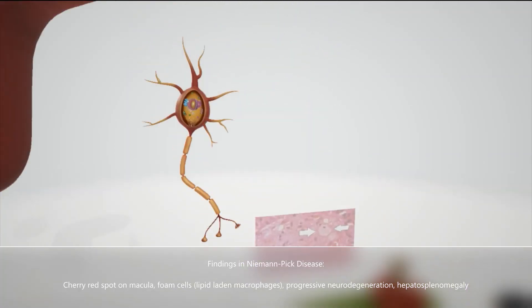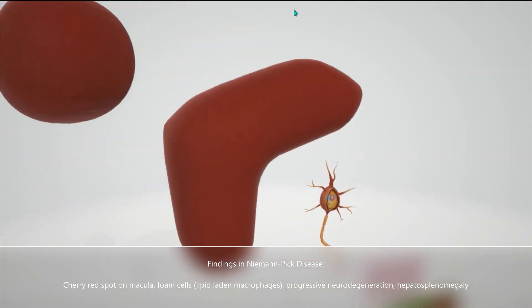Then the Sphinx goes through this neuron, and the neuron explodes. This helps us remember the progressive neurodegeneration seen in Niemann-Pick Disease due to the buildup of Sphingomyelin. Then the Sphinx goes through this gigantic liver and spleen in the sky. The gigantic liver and spleen help us remember the hepatosplenomegaly due to the buildup of Sphingomyelin.